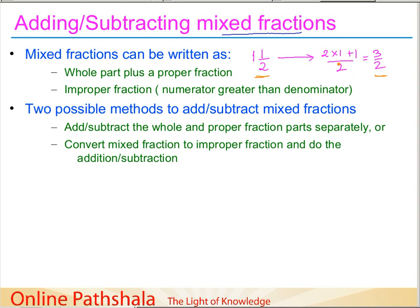Since there are two forms to represent mixed fractions — mixed fraction form and improper fraction form — we can do addition and subtraction in two possible ways. In the first method, we consider the whole parts separately and the proper fraction parts separately. We add or subtract the whole parts, then treat the proper fraction parts and determine whether they are like or unlike fractions, using the rules learned earlier.